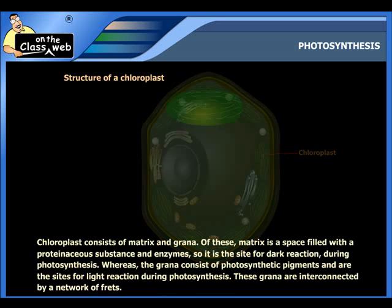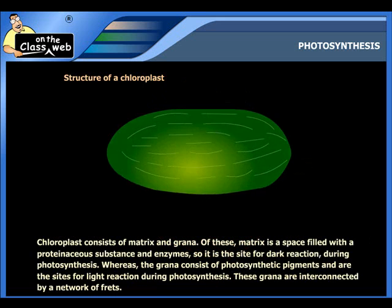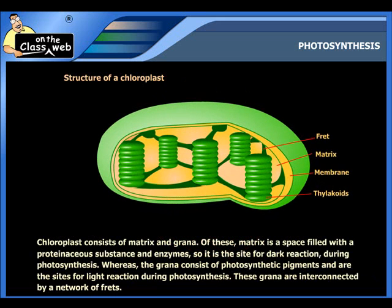The structure of chloroplasts shows that it consists of matrix and grana. The matrix is a space filled with a proteinaceous substance and enzymes, so it is the site for dark reaction during photosynthesis. Whereas the grana consist of photosynthetic pigments and are the sites for light reaction during photosynthesis. These grana are interconnected by a network of frets as shown.